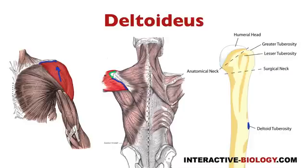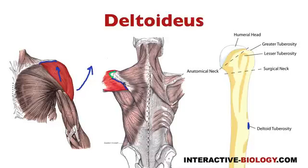What happens if the lateral or the acromial portion is contracting? That's going to cause abduction — you're basically raising your arm horizontally. And then what's going to happen if the posterior or the spinal section is contracting? That's going to cause the exact opposite of the anterior section, so it's going to cause extension of the arm.